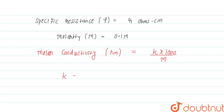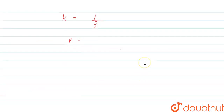Conductivity k is defined as the reciprocal of specific resistance. We know the specific resistance value is r ohm centimeter, so kappa equals 1 upon r. Now we can substitute this into the expression for molar conductivity: lambda M equals (1/r) into 1000 upon 0.1 molarity.